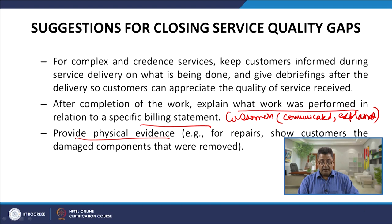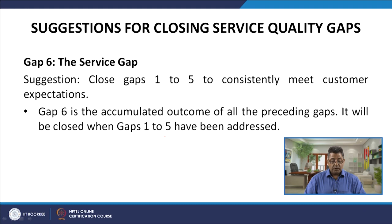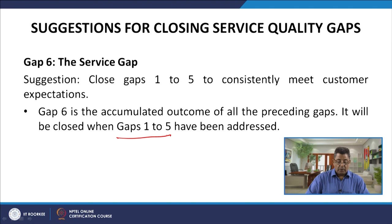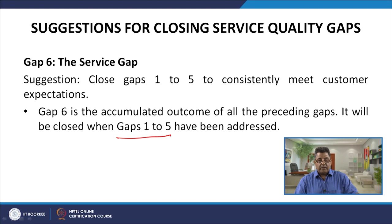For gap 6 — the service quality gap — the suggestion is to close gaps 1 to 5 to consistently meet customer expectations. Gap 6 is the accumulated outcome of all the preceding gaps and will be closed when gaps 1 to 5 have been addressed. The bigger gap 1 is, the more it passes on to gaps 2, 3, 4 and 5. The biggest challenge is to narrow down gaps 1 through 5, and then gap 6 will automatically be reduced or eliminated — that is when customer perceptions meet customer expectations.